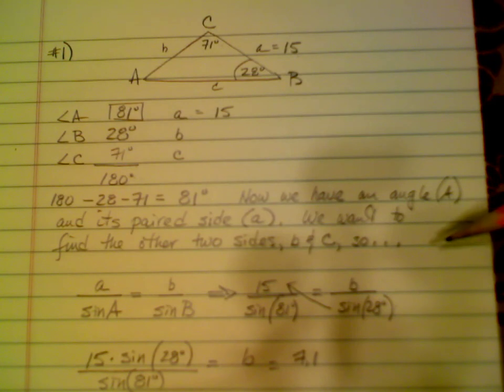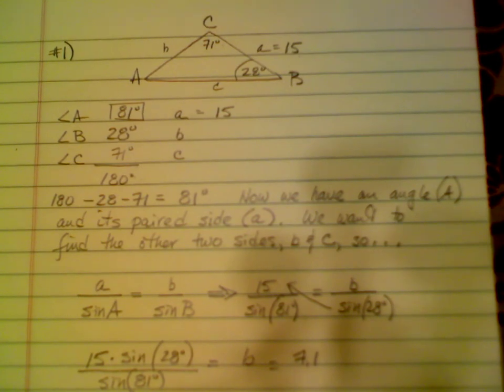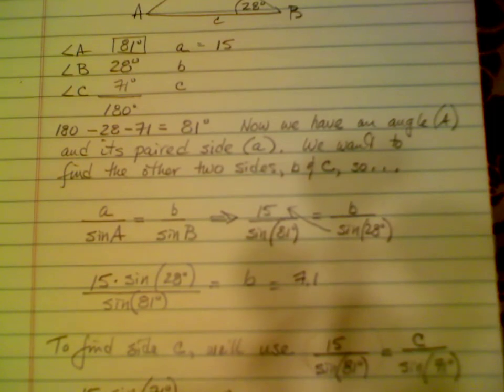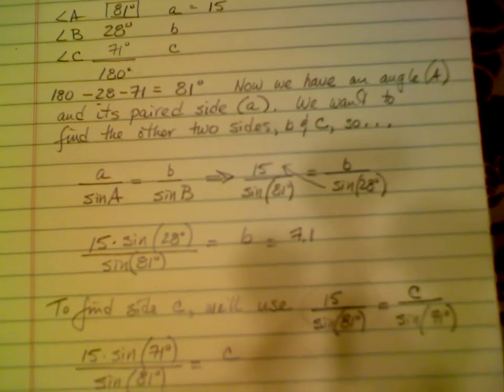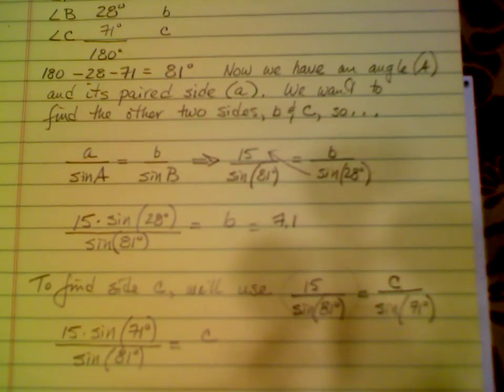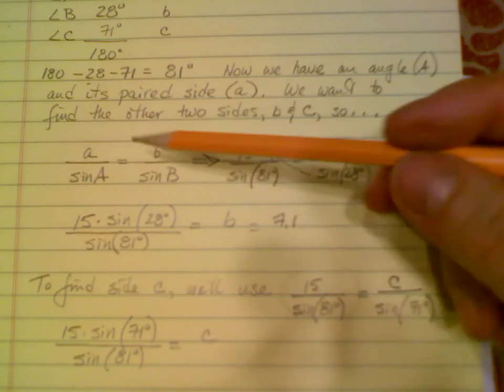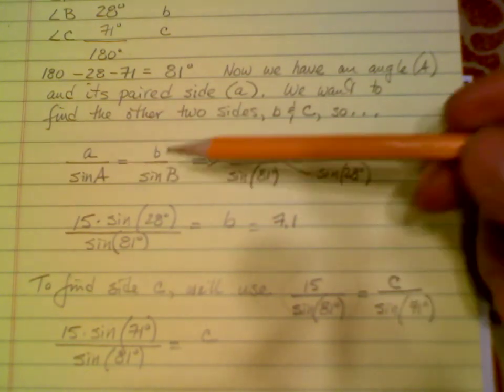So now we have an angle and its paired side A, so we want to find the other two sides, B and C. We're going to use the law of sines, and since we're trying to find a side, we'll set up the proportions this way: A over sine A equals B over sine B.